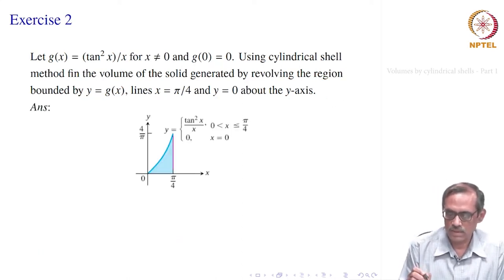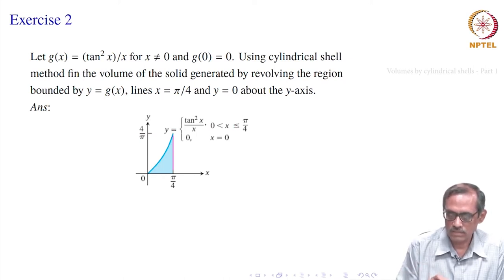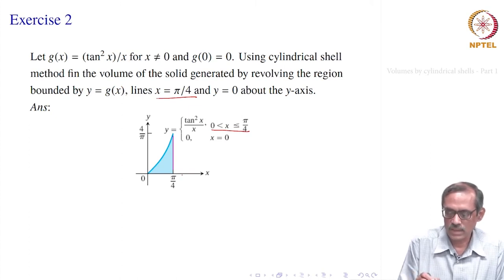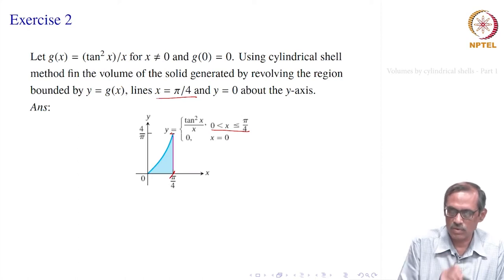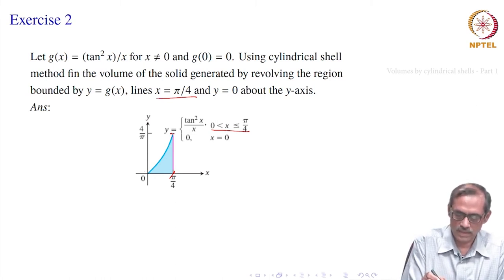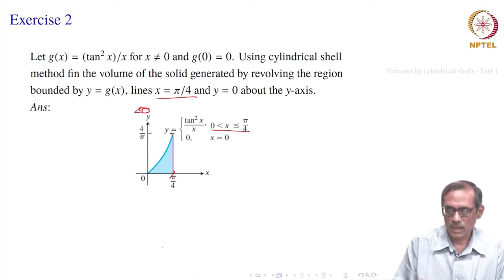The function is y = tan²x / x, and at 0 it is 0. We have the line x = π/4, so we limit our focus to x ≤ π/4. In the first quadrant, tan²x remains positive. When x = π/4, the curve crosses at y = 4/π, since tan(π/4) = 1. This is how the region looks. This region is revolved about the y-axis, and you can also use the disk method here, but let us use the cylindrical shells method.